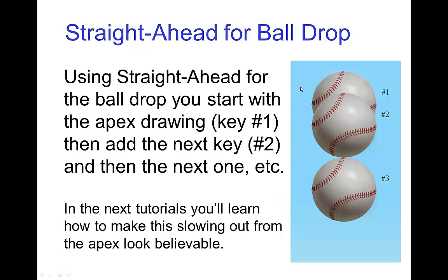For the ball drop, the idea in straight ahead would be to start from the apex drawing, then pick the next drawing — if shooting on twos, that would be two frames later — then after establishing where that one is, go to the third drawing, and so forth. The question is how to get these spacings so that it looks like believable slowing out from an apex, and that's what we'll be doing in the next few tutorials.